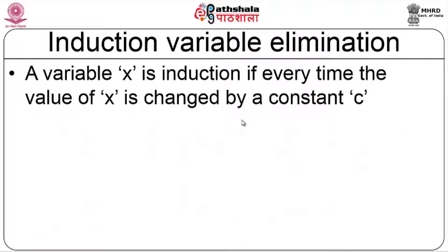The previous module discussed loop invariant computation as well as code motion. We have to ensure that code motion does not result in illegal movement — it should be a valid one. In continuation with that, we will discuss what is called induction variable elimination.